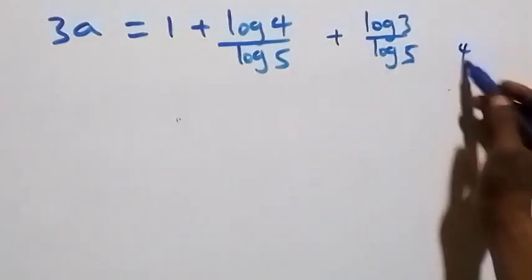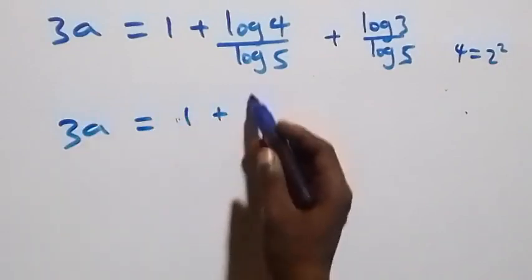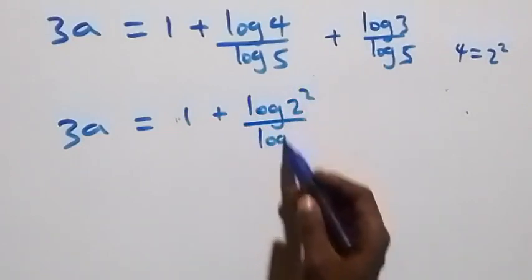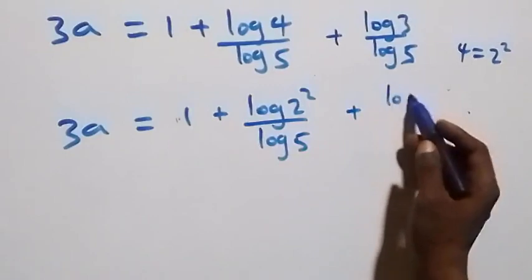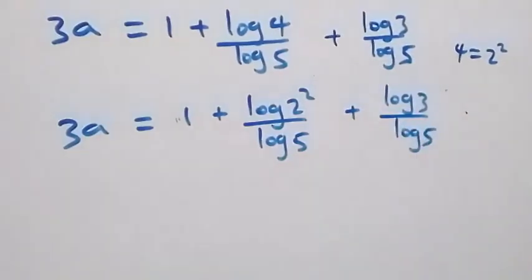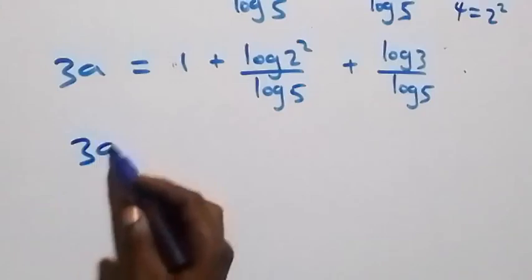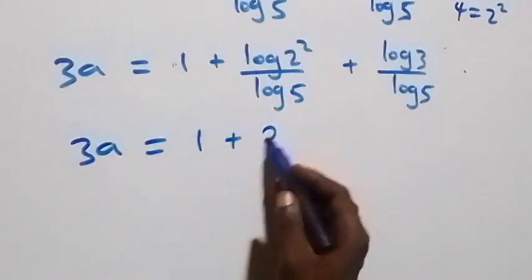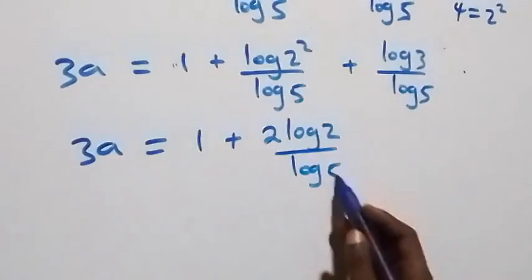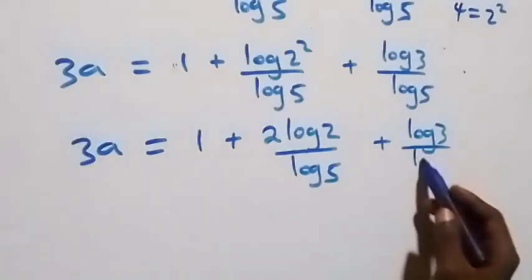From here, we can write 4 as 2 times 2, which is 2 squared. So what we have becomes 3a equals 1 plus log of 2 squared over log 5, plus log 3 over log 5. Applying the power rule of logarithms, we bring the exponent down and have 3a equals 1 plus 2 log 2 over log 5, plus log 3 over log 5.